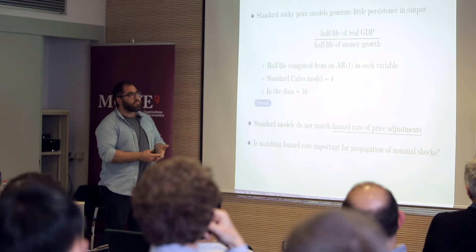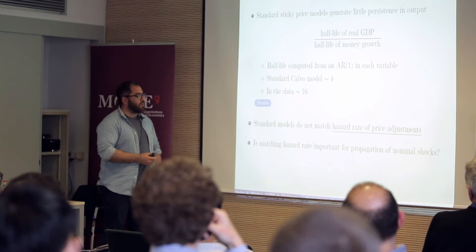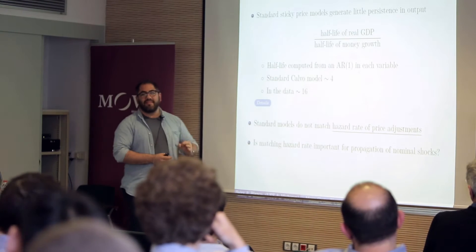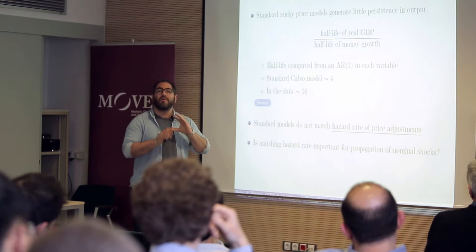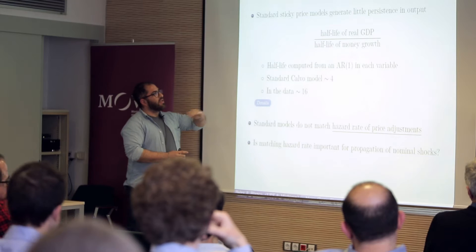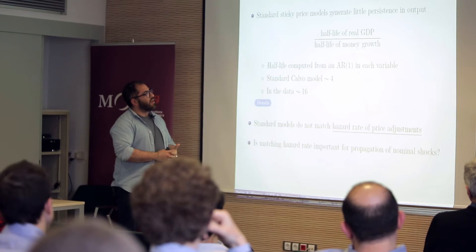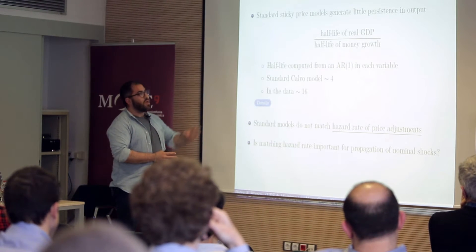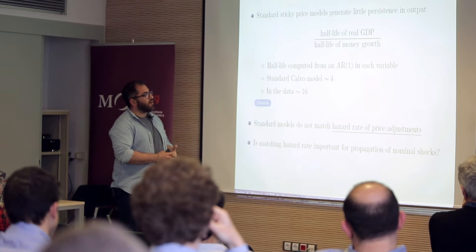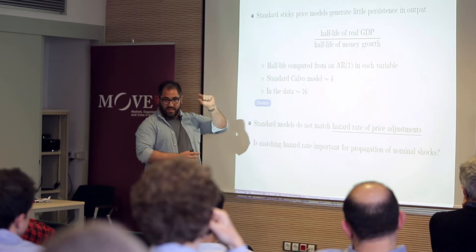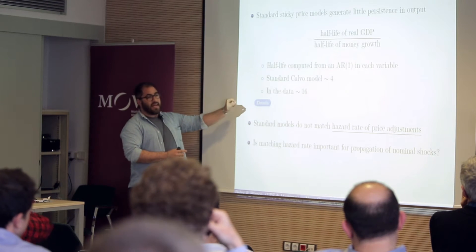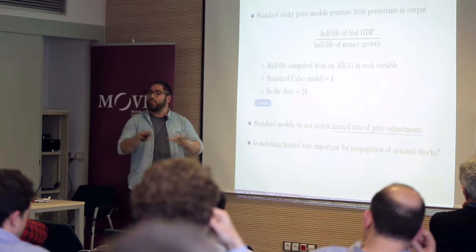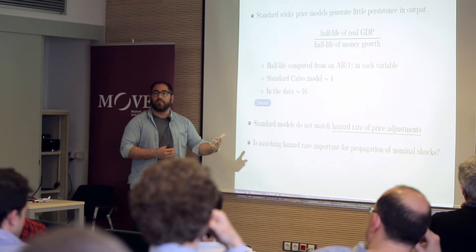Think of a standard sticky price model — a Calvo type, Gali Chapter 3 type of model. These models generate very little persistence in output of a monetary shock. Consider an impulse response and take the half-life of real GDP divided by the half-life of money growth, where we compute these statistics from an AR(1) in each variable. The standard Calvo model implies a ratio of four. When you go to the data, this ratio is about 16. Our standard models are missing some of this persistence.